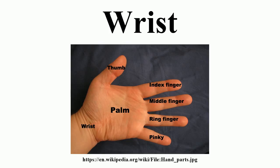However, movements at the wrist cannot be properly described without including movements in the distal radioulnar joint, in which the rotary actions of supination and pronation occur. This joint is therefore normally regarded as part of the wrist.